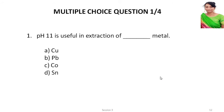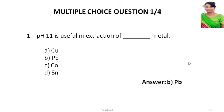Now let us move on to four multiple choice questions. The first one: pH 11 is useful in the extraction of which metal? Options are copper, lead, cobalt, and tin. Referring to the chart provided earlier, the answer is lead. Lead can be extracted by varying the pH to 11.